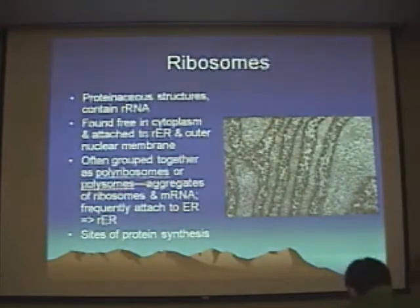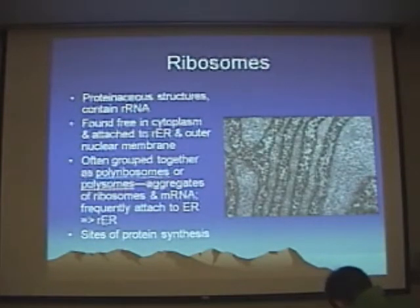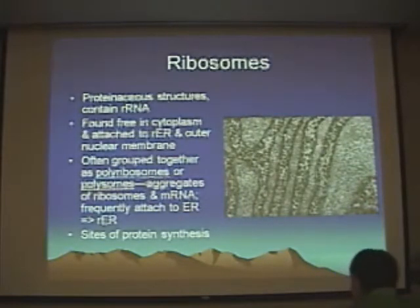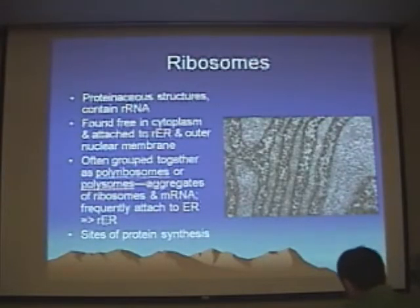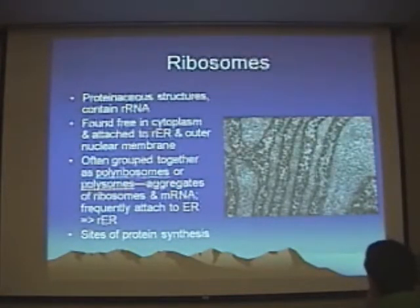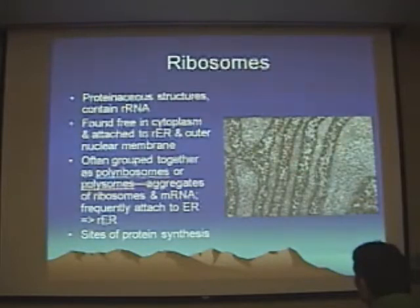The ribosomes tend to cluster along the endoplasmic reticulum. When they do that, that studding of the ER with ribosomes results in the formation of what's called RER — rough endoplasmic reticulum — because the ER now looks rough because it's got these big dark blobs on its length. You can see these dark spots on the electron micrograph, and they represent clumps of RNA.